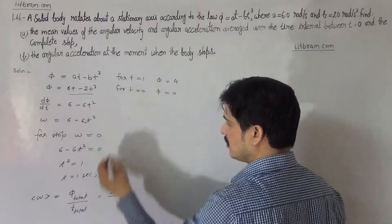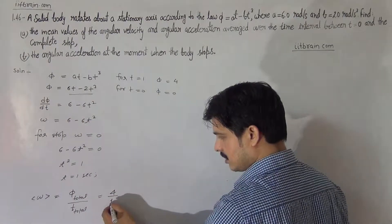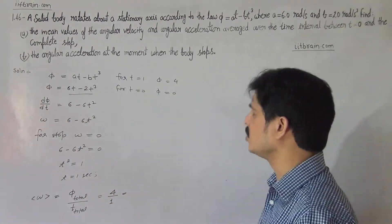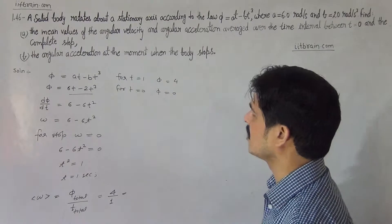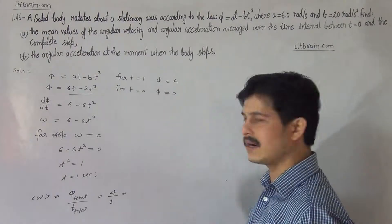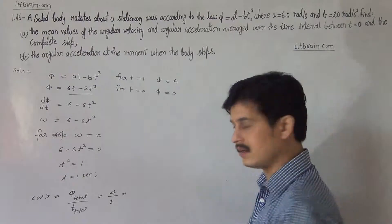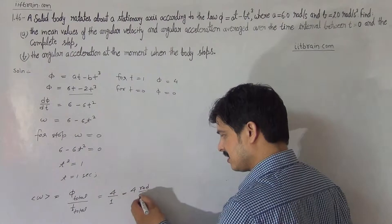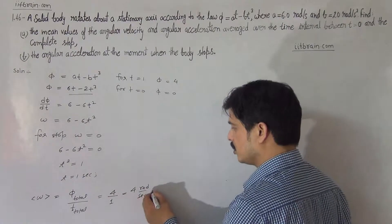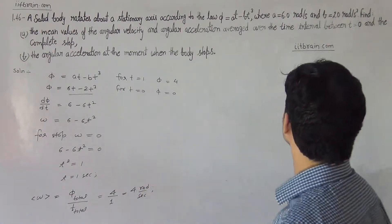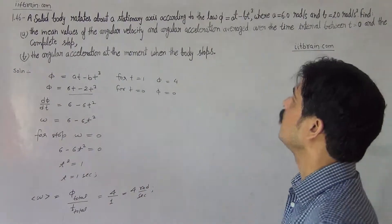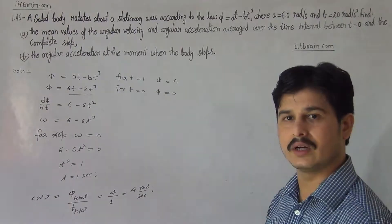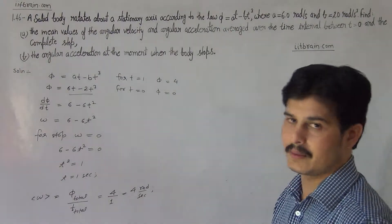The total time is 1 second. In that 1 second interval, the particle covered 4 radian. So the mean angular velocity is 4 radian per second. Therefore, the mean value of angular velocity of the particle is 4 radian per second.